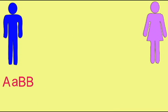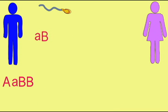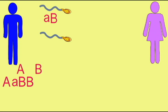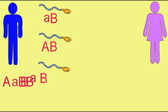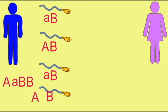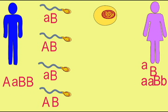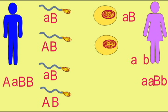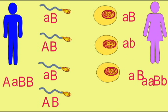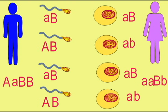If an individual is homozygous for one gene but heterozygous for the other, then they can produce two different types of gametes. All gametes will possess the same allele for the gene which this individual is homozygous for, while sometimes possessing the dominant or recessive alleles for the second gene.